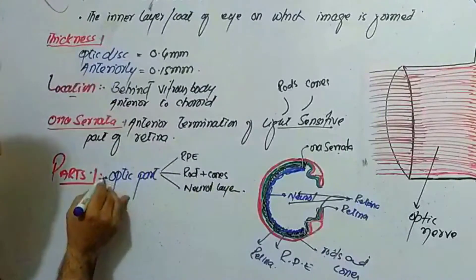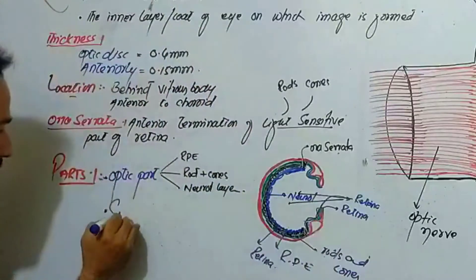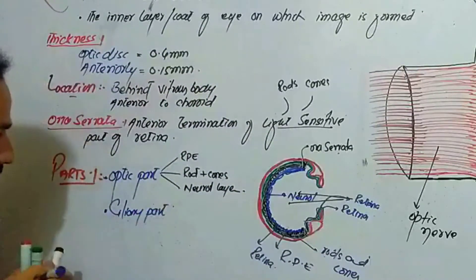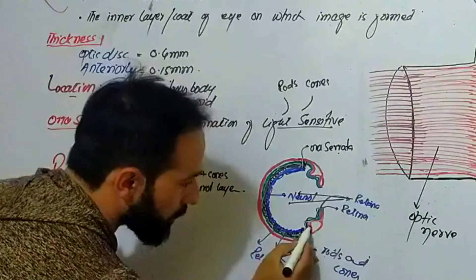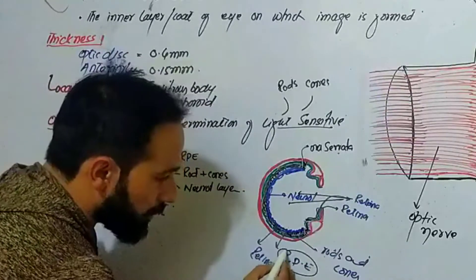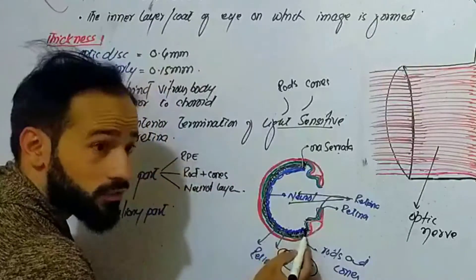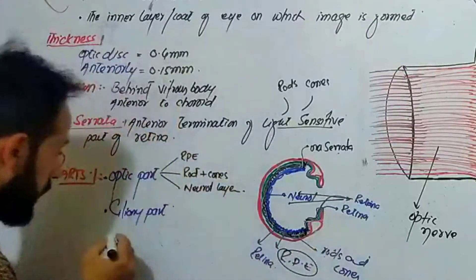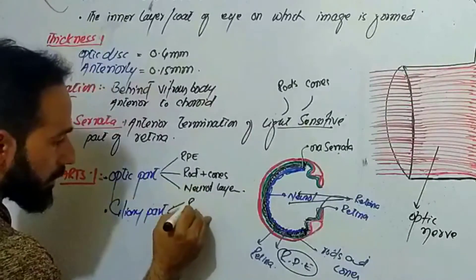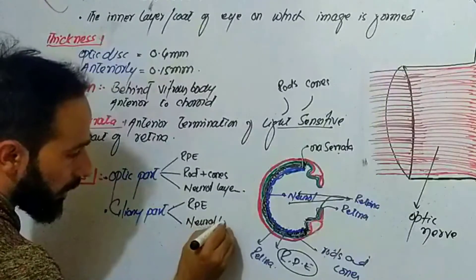Then there is the ciliary part of the retina. This part of the retina is present behind the ciliary body and it contains the retinal pigment epithelium and the neural part. But rods and cones will not go forward. So the ciliary part of the retina contains only the retinal pigment epithelium and the neural layer.